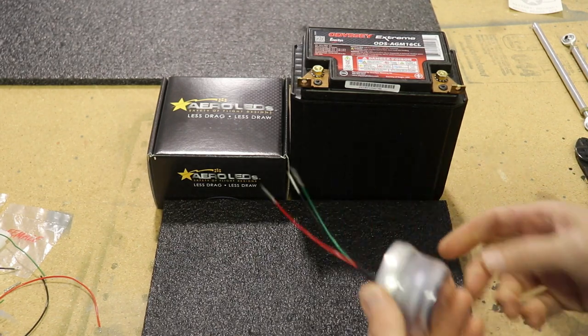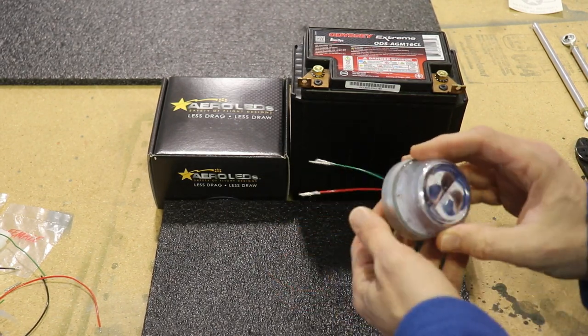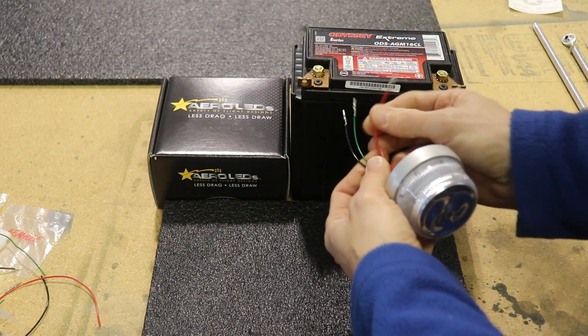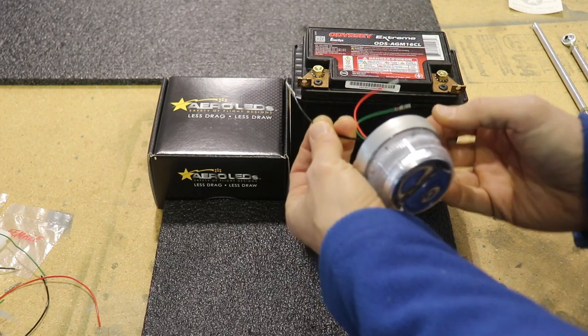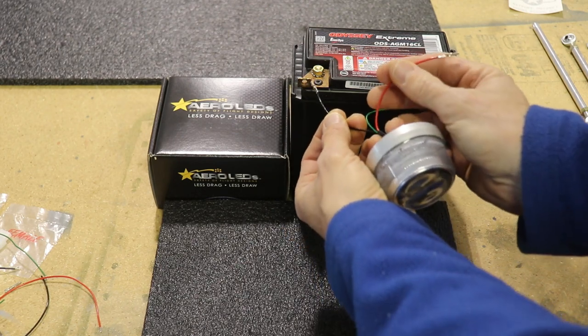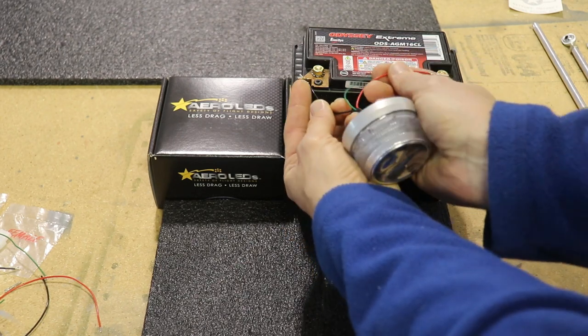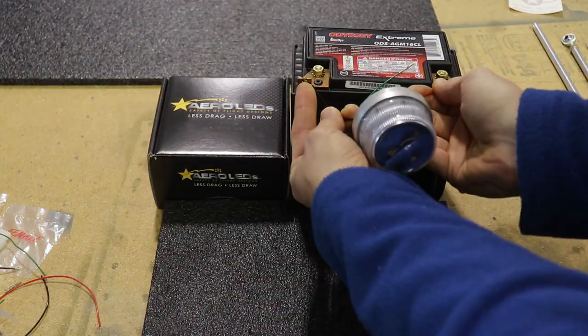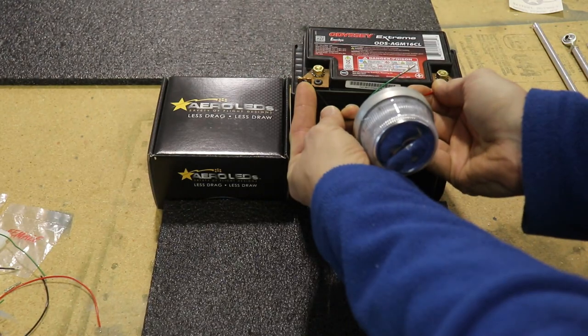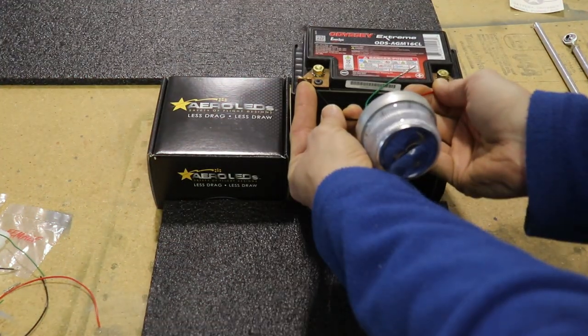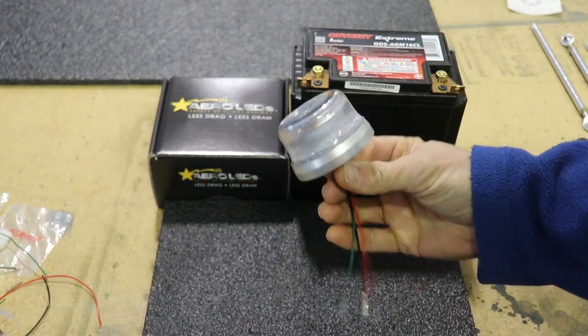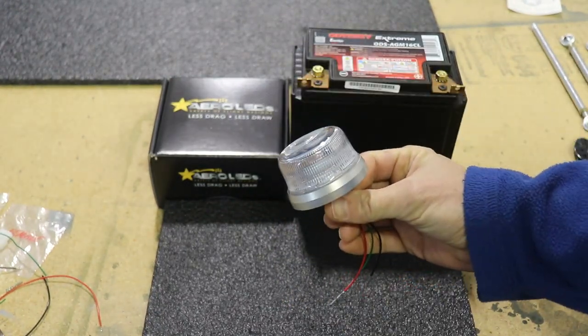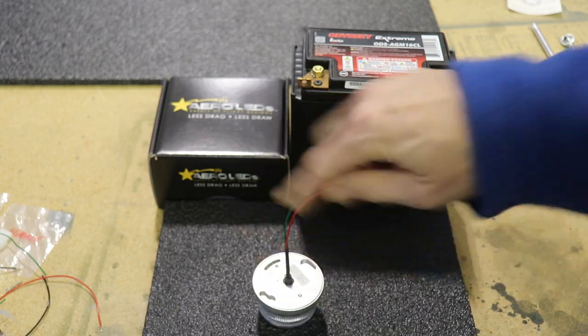Before I put this in the airplane, I want to show you how bright this light actually is. I am not exaggerating when I tell you that when I turn this on I cannot look at the light—it's that bright. I'm not sure how it'll look on the screen, but here we go. That's pretty awesome. Yeah, it would hurt my eyes to even look at that. You really can't look at it when it's on, and that is what I love about the Aero LED lights—they are super bright. Now let's put that on the airplane.